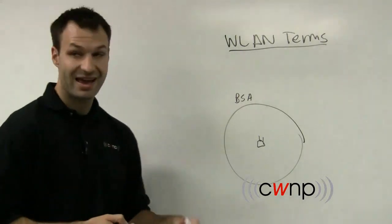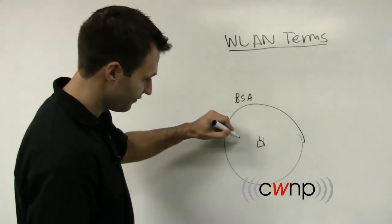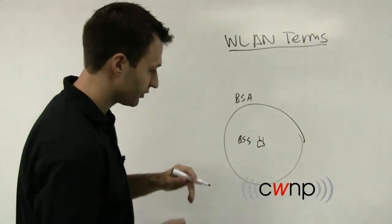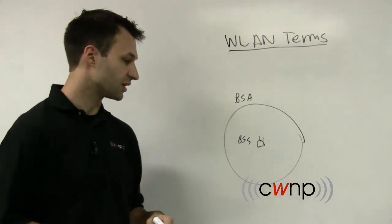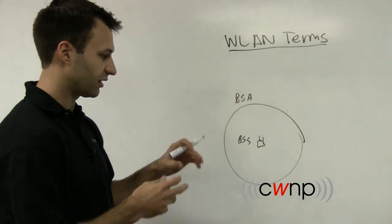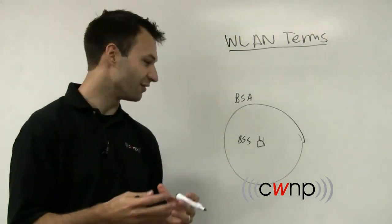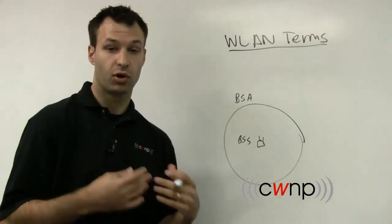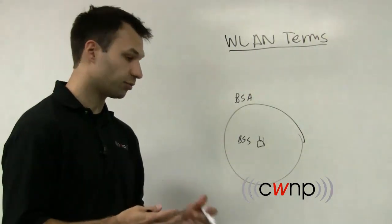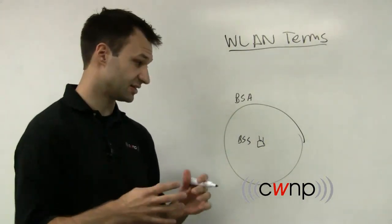In addition to the BSA, we also have a term called the BSS. Now, each individual access point's service set is called a BSS. So a basic service set is a BSS, and this is an SSID specific set of services. So an access point may have multiple SSIDs, multiple network names or multiple networks that it serves. Each one of those is a BSS.